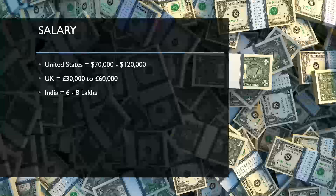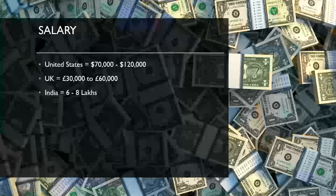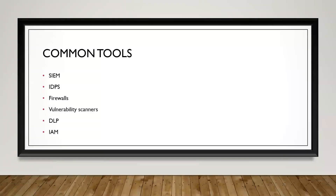Now let's talk money. In the US, the typical starting range for a cybersecurity analyst, infosec analyst, or SOC analyst is around $70,000 to $80,000, depending on location and company. Some places start as low as $50,000. You usually won't hit six figures until tier two or tier three, when you move into a senior IR role. In the UK it's £30,000 to £60,000, and in India it's around six to eight lakhs per year.